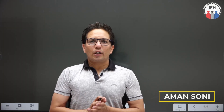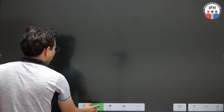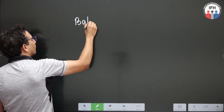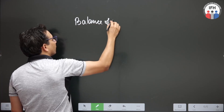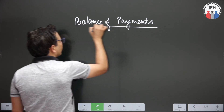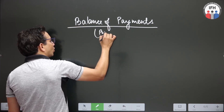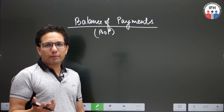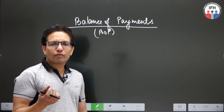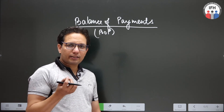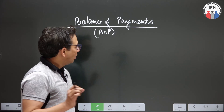Hello, I am Aman Soni and today I will be discussing with you balance of payments and its components. Balance of payments, in short, is also called BOP. Balance of payment is a record of all financial transactions made between residents of a country and non-residents in a period of one year.